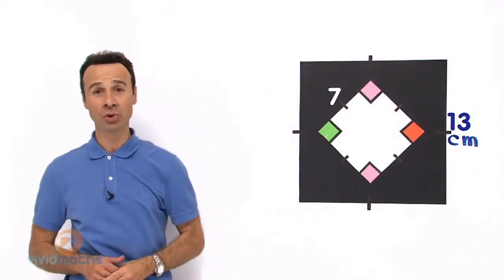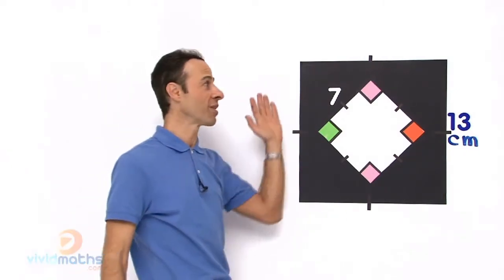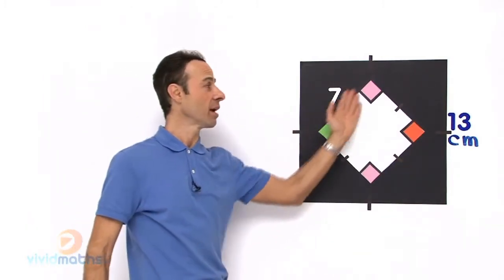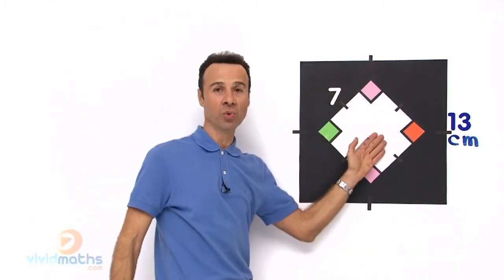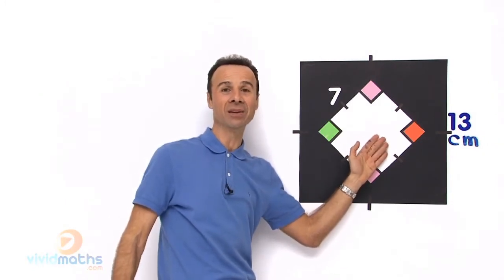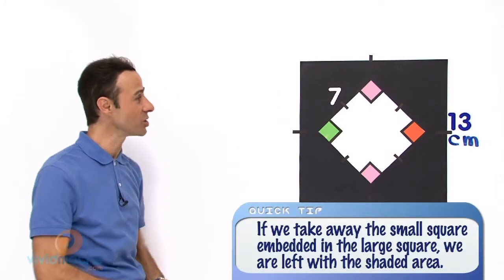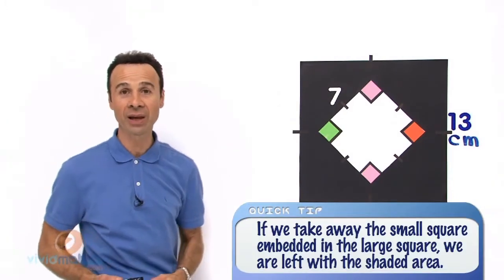Now the way we are going to do this is 2 steps. Step number 1: work out the area of the large square and then take away the area of the white small square inside embedded within the large square. OK, so let us do these 2 steps. Let us do step number 1 which is to work out the area of the big square.